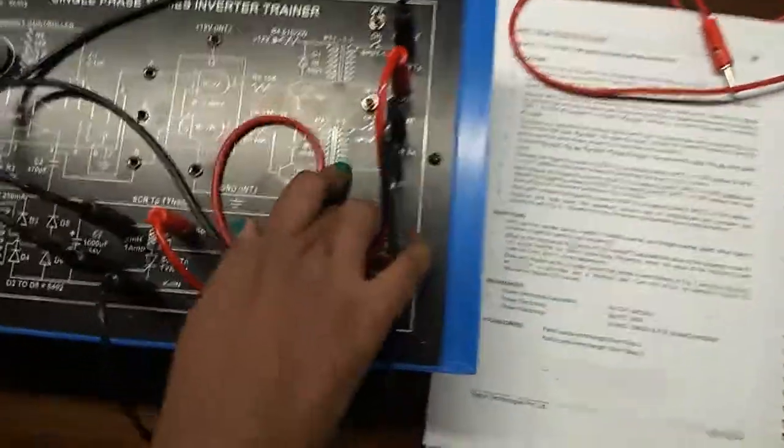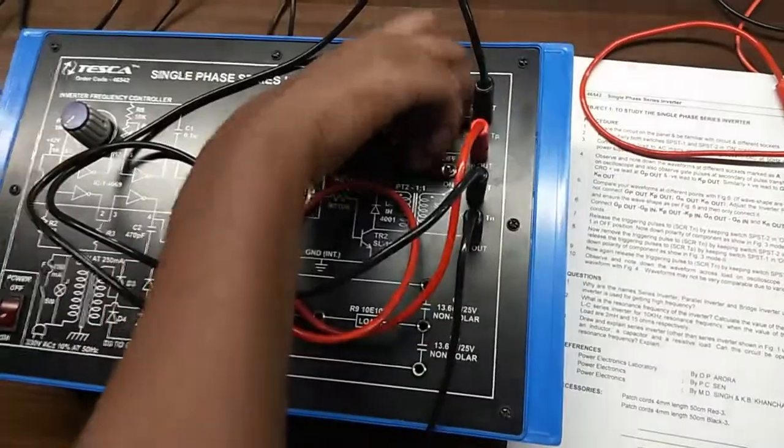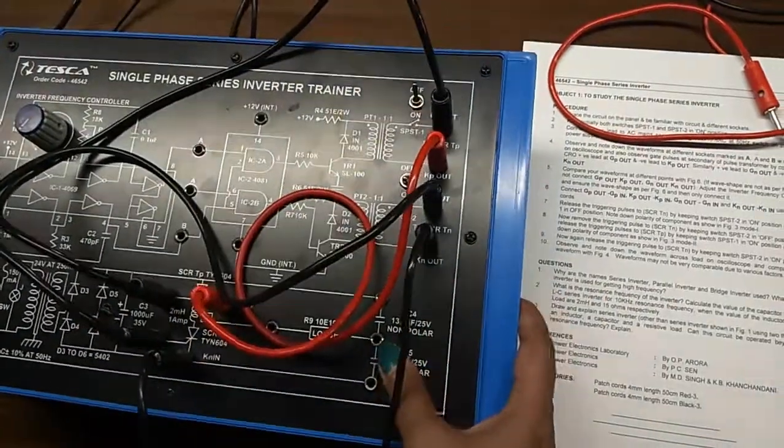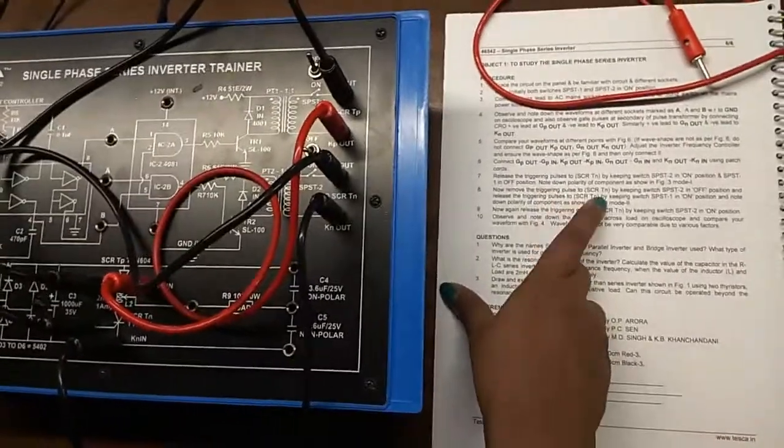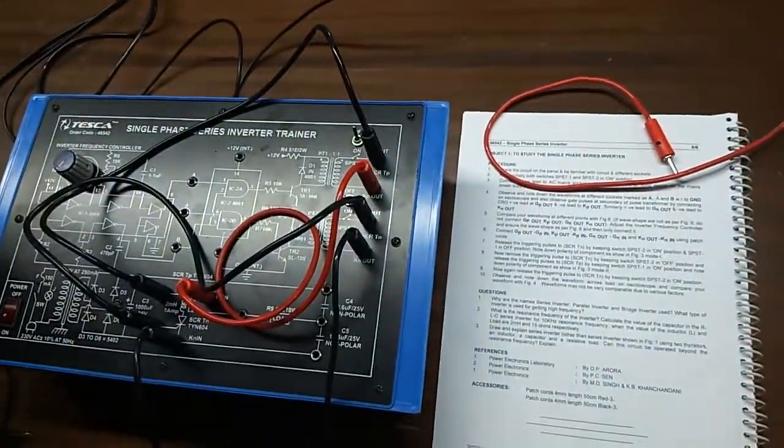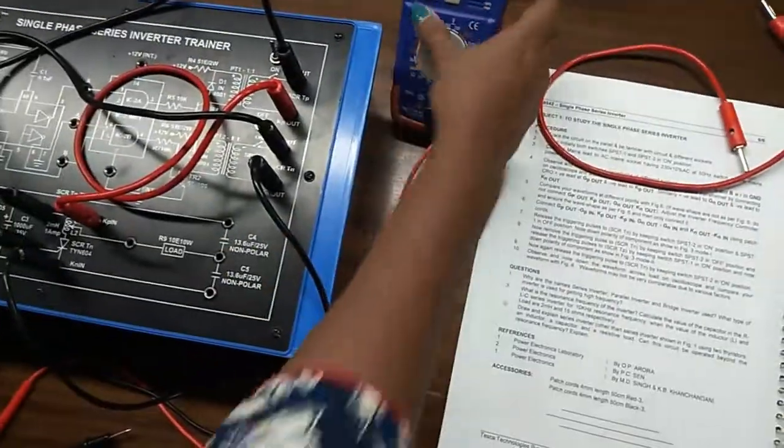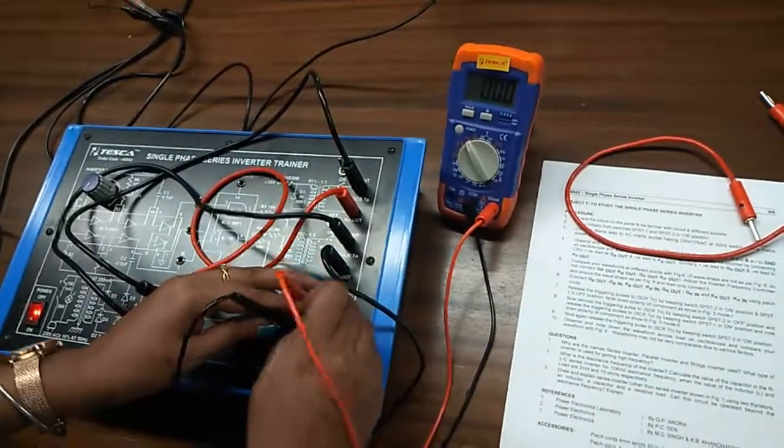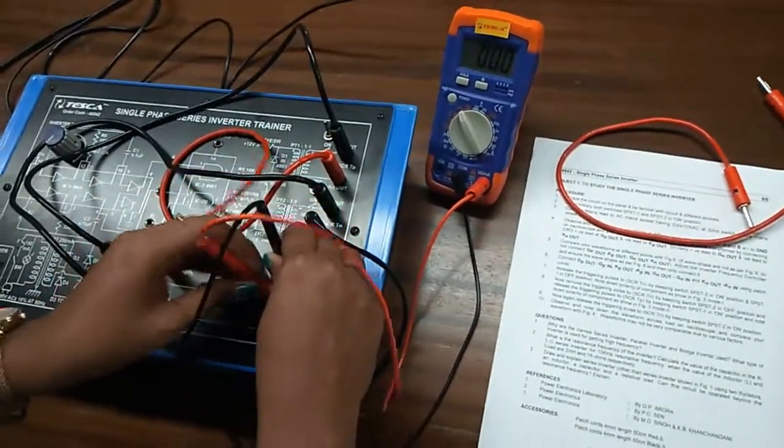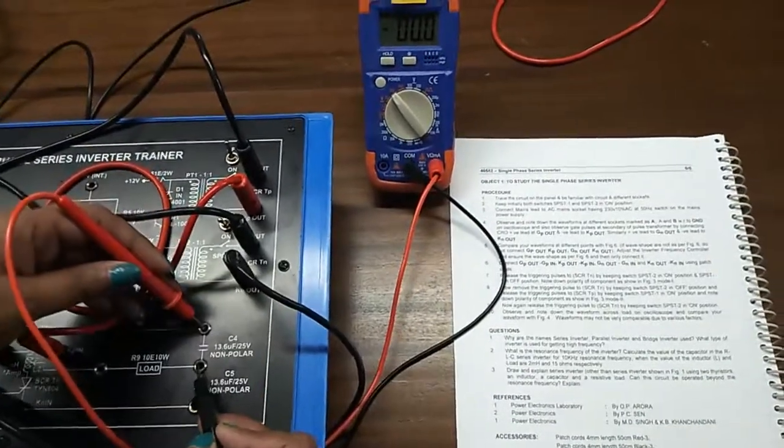Keep this SPST 2 switch in on position and SPST 1 switch in off position. Now we will note down the polarity of the components. We can see that this one is plus and this one is minus; this one is plus and this one is minus.